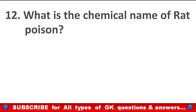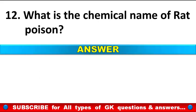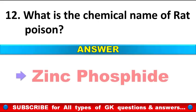What is the chemical name of red poison? Answer: zinc phosphide.